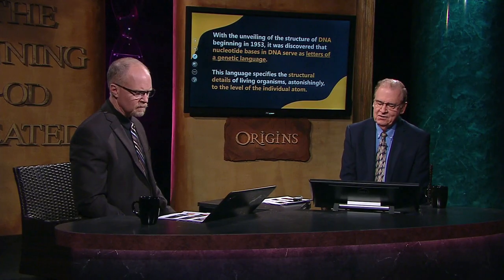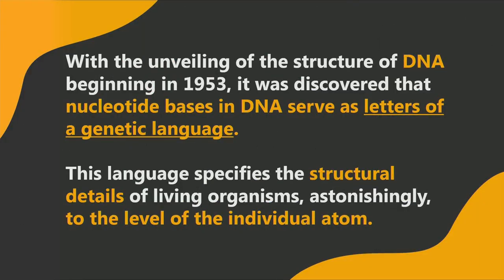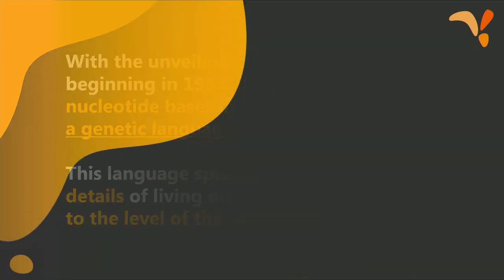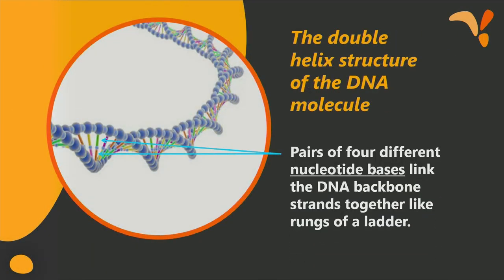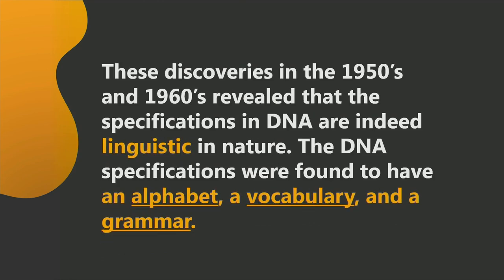So that began the point where we realized there's a lot going on here that isn't just random processes — something is ordering and communicating and directing. With the unveiling of the structure of DNA beginning in 1953, it was discovered that nucleotide bases in the DNA serve as letters of a genetic language. This language specifies the structural details of living organisms astonishingly down to the level of the individual atom — the rungs in the ladder linking the two helical backbones of DNA together. These discoveries in the 1950s and 60s revealed that the DNA specifications are indeed linguistic.